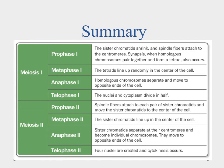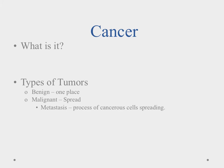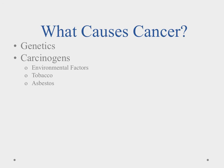Cancer is a cell that has forgotten how to stop growing — it continues to divide and reproduce, forming a mass called a tumor. Benign tumors stay in one place; malignant tumors spread, a process called metastasis. Cancer causes include genetics (some people are predisposed), and carcinogens — chemical or environmental triggers such as sunlight, tobacco from cigarette smoke, and asbestos, which can cause lung cells to mutate and begin growing uncontrollably.